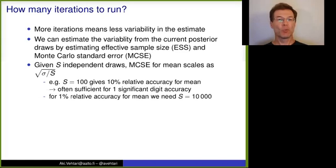To get one percentage relative accuracy for mean, we need 10 times more accuracy. And because of the square root, it means we need 100 more draws, and so we need 10,000 draws.